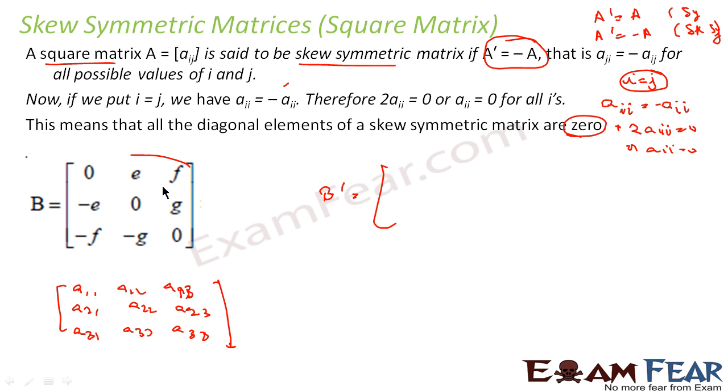This row I will make as a column: this becomes 0, e, f. This becomes minus e, 0, g. This becomes minus f, minus g, 0.